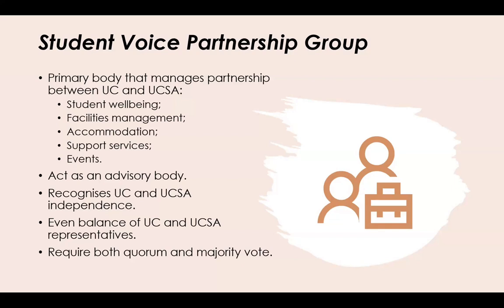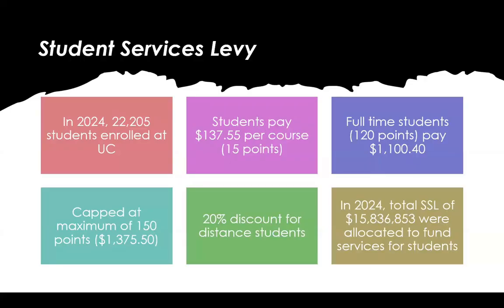You might be wondering how UCSA is funded. UC has a Student Services Levy fee — each student who enrolls has to pay this. This year we have over 22,000 students, and students pay per course enrolled in — each course is about 15 points, so it's $137 per 15 points. If you were a full-time student you'd be paying a little over a thousand dollars, with a cap once you reach over 150 points per year.